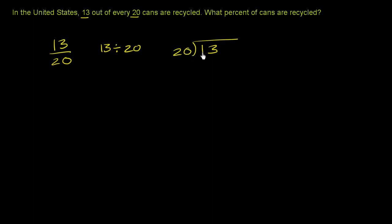And if we do this, we'll get a decimal. And it's fairly straightforward to convert that decimal into a percentage. So 13 divided by 20. We have the smaller number, in this case, being divided by the larger number. So we're going to get a value less than 1. Since we're going to get a value less than 1, let's put a decimal right over here. And let's add a couple of 0's, as many 0's as we would need.